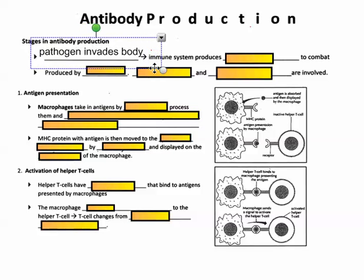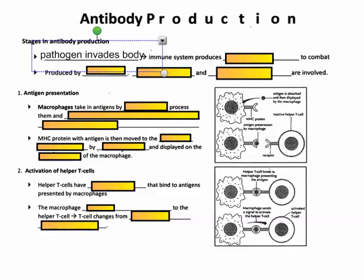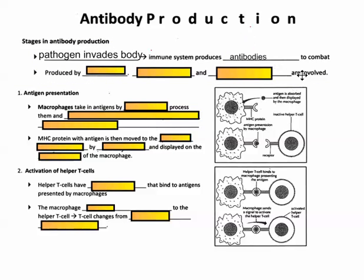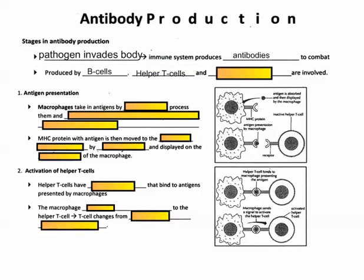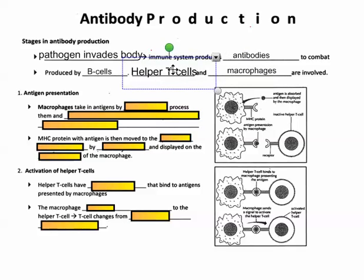In general, we're producing antibodies in response to being invaded by some kind of pathogen. When a pathogen invades the body, the immune system is going to produce antibodies to combat it. These antibodies are produced by B cells — called B lymphocyte cells. Helper T cells and macrophages are also involved.